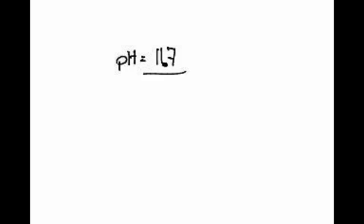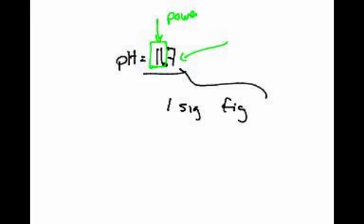Looks like three sig figs. But that'd be wrong. The thing with pH — if you think about it mathematically, the 11 right here is actually showing the power of 10, and the 7 is the actual value. So sig figs in pHs: this is actually considered to only have one sig fig, and that sig fig is the 7.